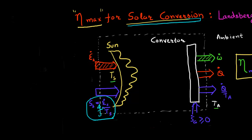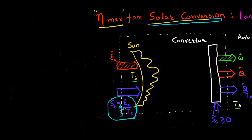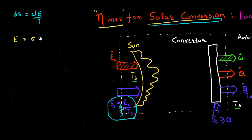Where does this factor of 4/3 come from? Let me move to this side so I have more space for this derivation. I know that the fundamental definition of entropy is defined such that the entropy flux is related to the energy flux by dS = dE / T. Also, for radiation coming from a black body, the total energy in that radiation can be related to the temperature of the black body — it's proportional to T to the power four. This is what we call the Stefan-Boltzmann law, with the Stefan-Boltzmann constant as the proportionality constant. Now I can take this equation and take a differentiation with respect to temperature.